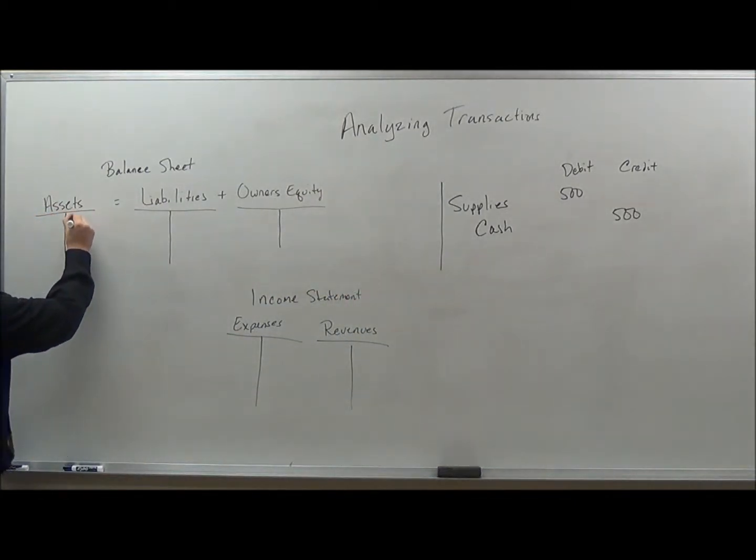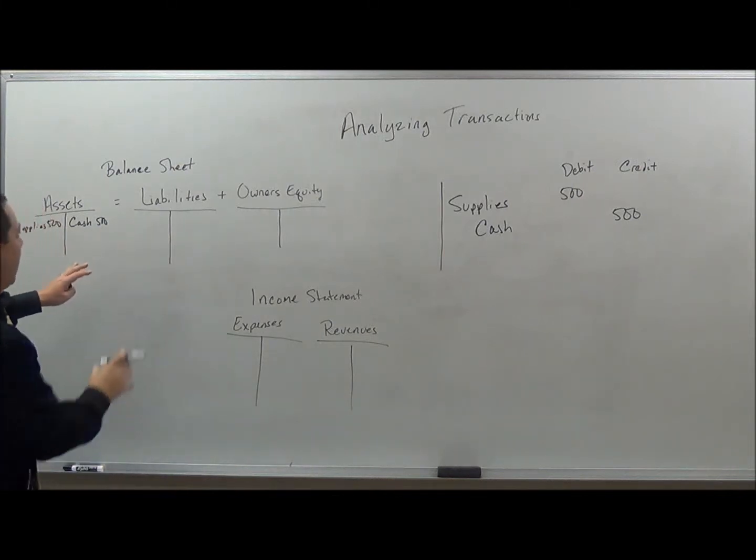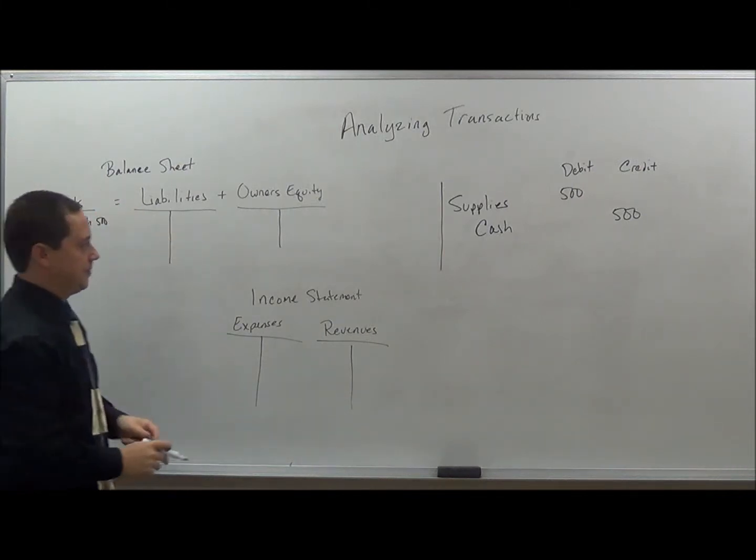Again, this is cash over here, $500. I'm taking that away and then adding $500 of supplies right here. So again, this accounting equation still balances. All right, so let's try a different one here.